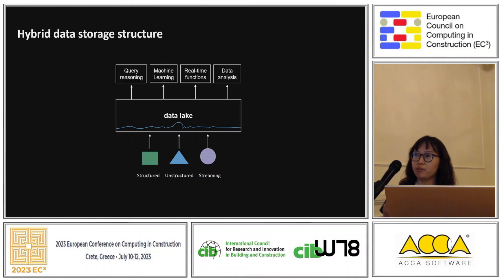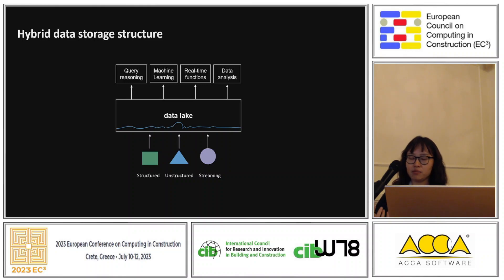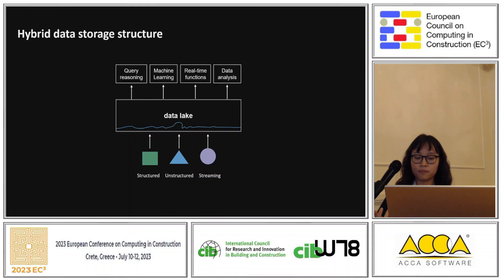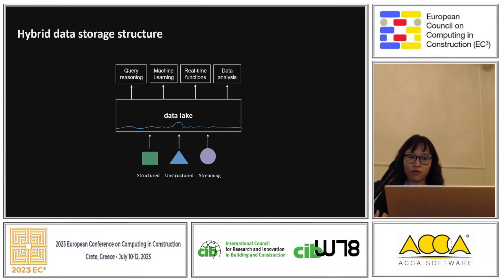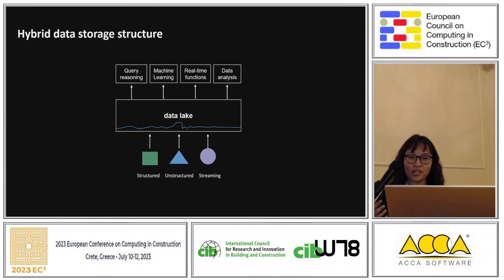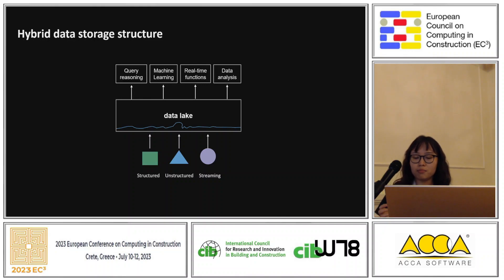When handling streaming data protocols like BACnet or KNX, the conversion process can be really complex and time-consuming, as Alex also mentioned. The semantic web can sometimes lead to data size increases and potentially impact storage and performance. In this research, we proposed a hybrid data storage structure which includes a data lake — a central location that hosts multiple data formats stored in their native raw format. The data lake can eliminate problems with data silos, especially data duplication, multiple security policies, and difficulty with collaboration.